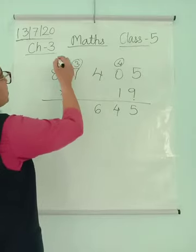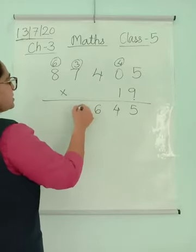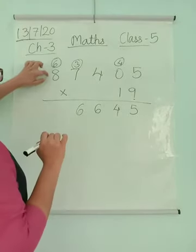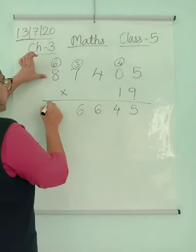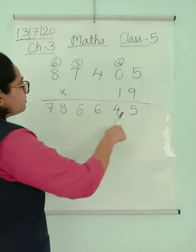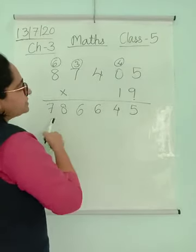9×8 are 72, 72 plus 6 is 78. So I have multiplied by 9 and I get this answer.